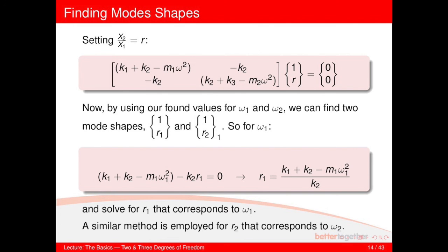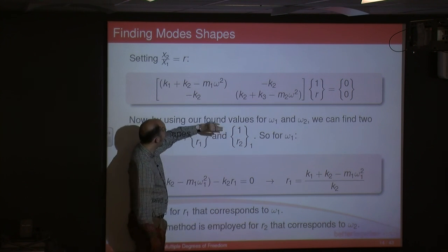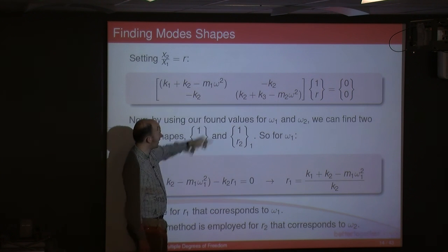So that solves for R1, you get a first mode shape, you repeat the process for R2. So you take your omega 2, you stick it into here, and you go through the process solving for R2.